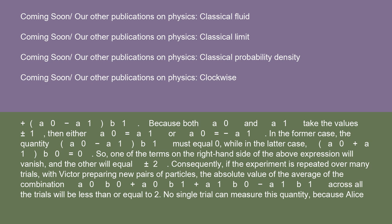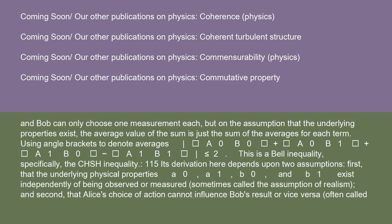No single trial can measure this quantity, because Alice and Bob can only choose one measurement each. But on the assumption that the underlying properties exist, the average value of the sum is just the sum of the averages for each term. Using angle brackets to denote averages: ⟨A0B0⟩ + ⟨A0B1⟩ + ⟨A1B0⟩ − ⟨A1B1⟩ ≤ 2. This is a Bell inequality — specifically the CHSH inequality.